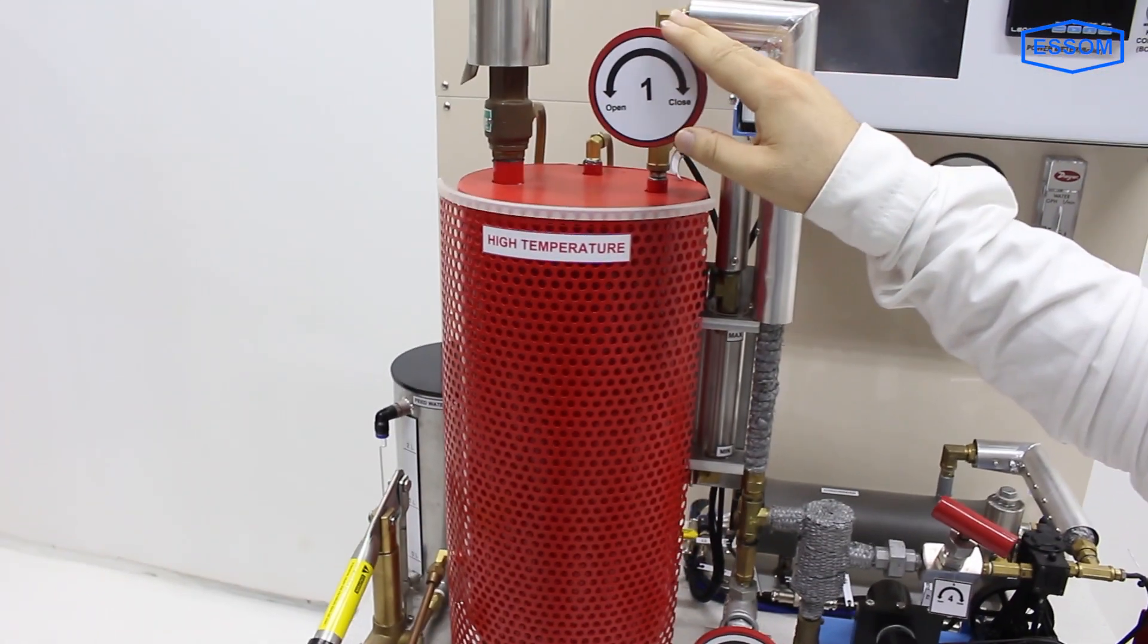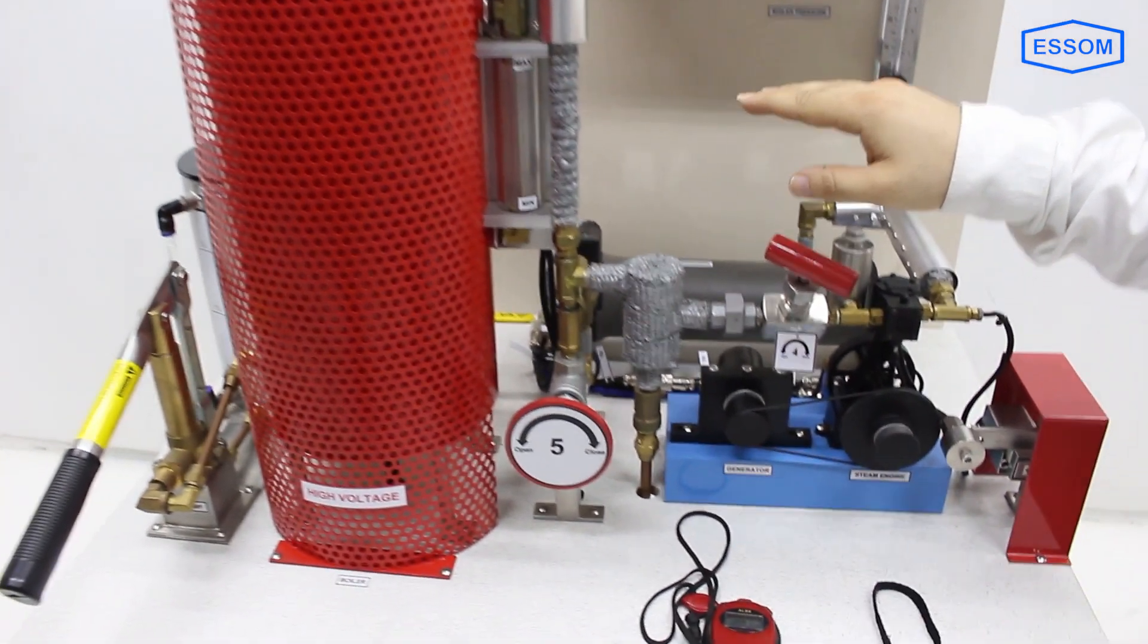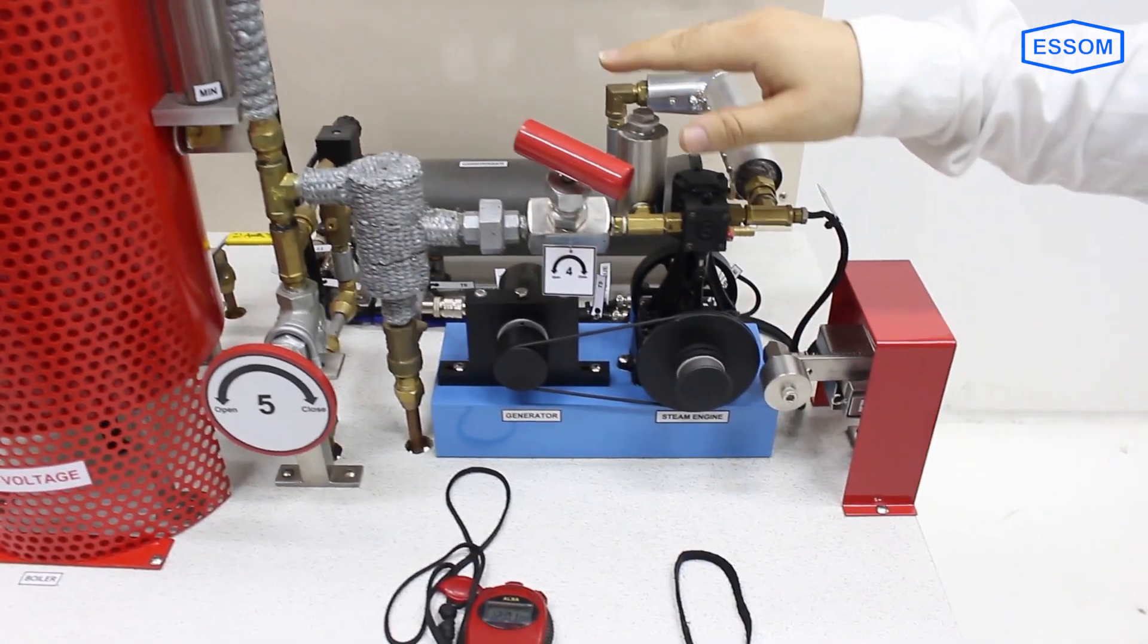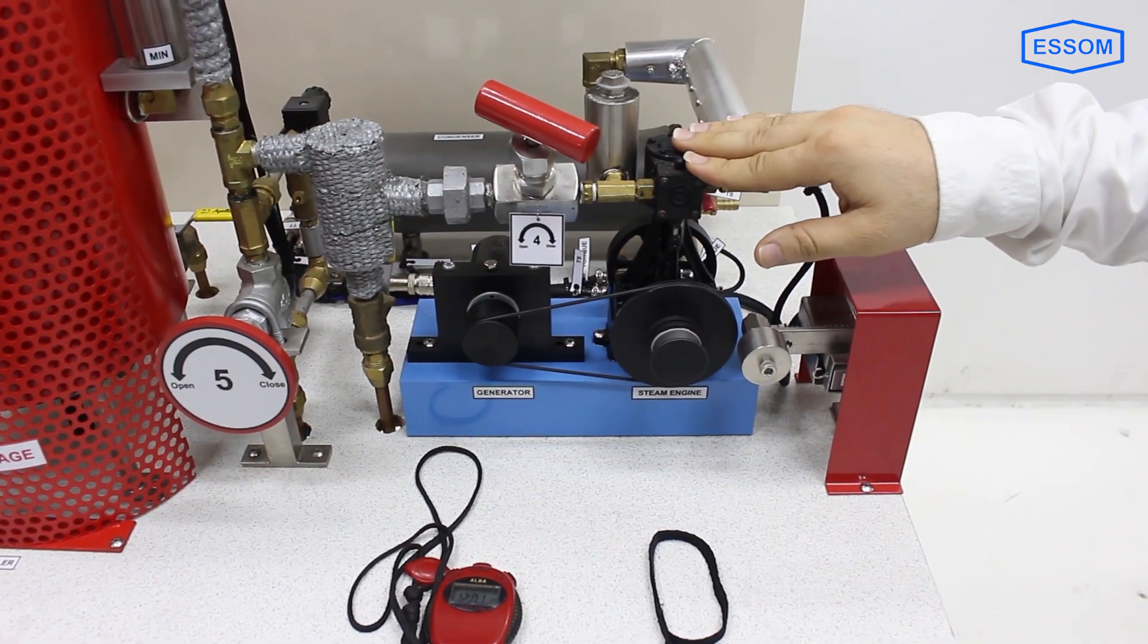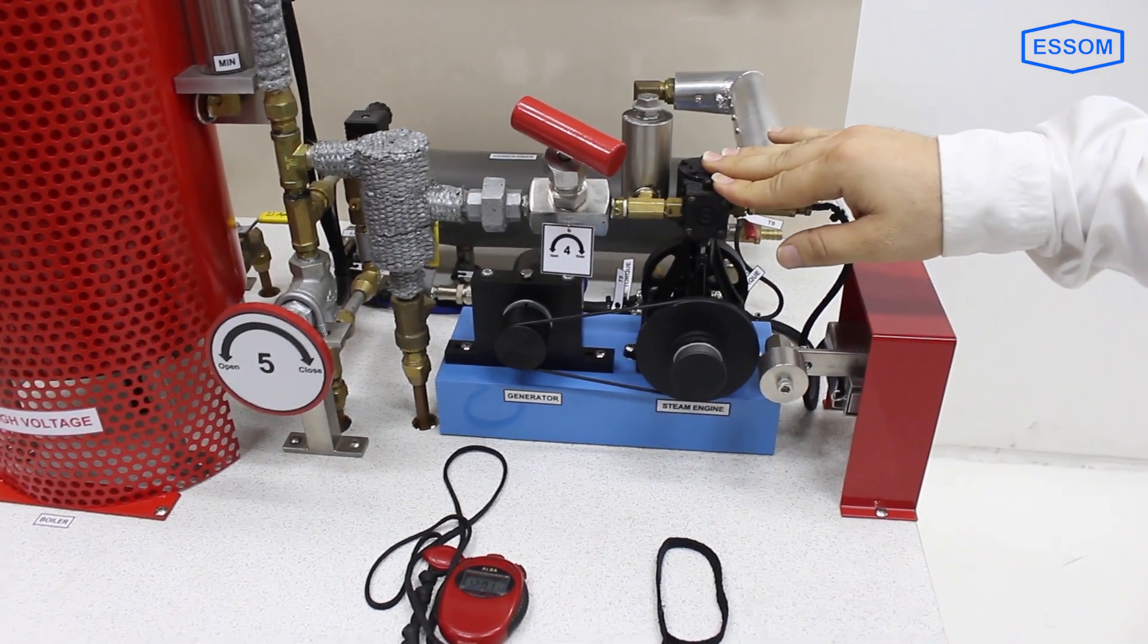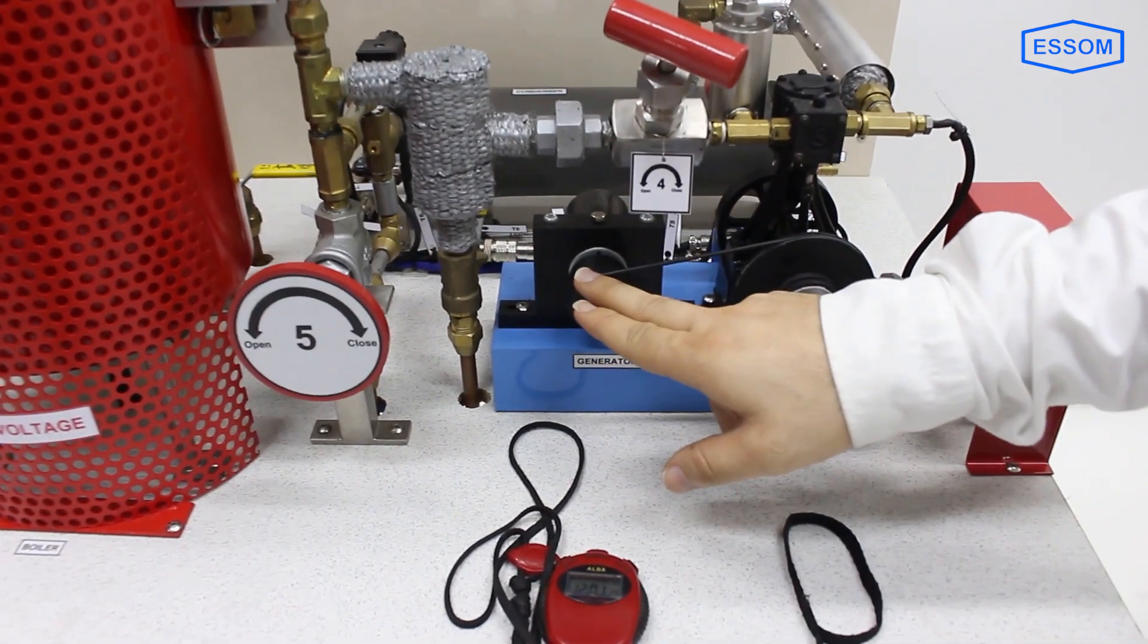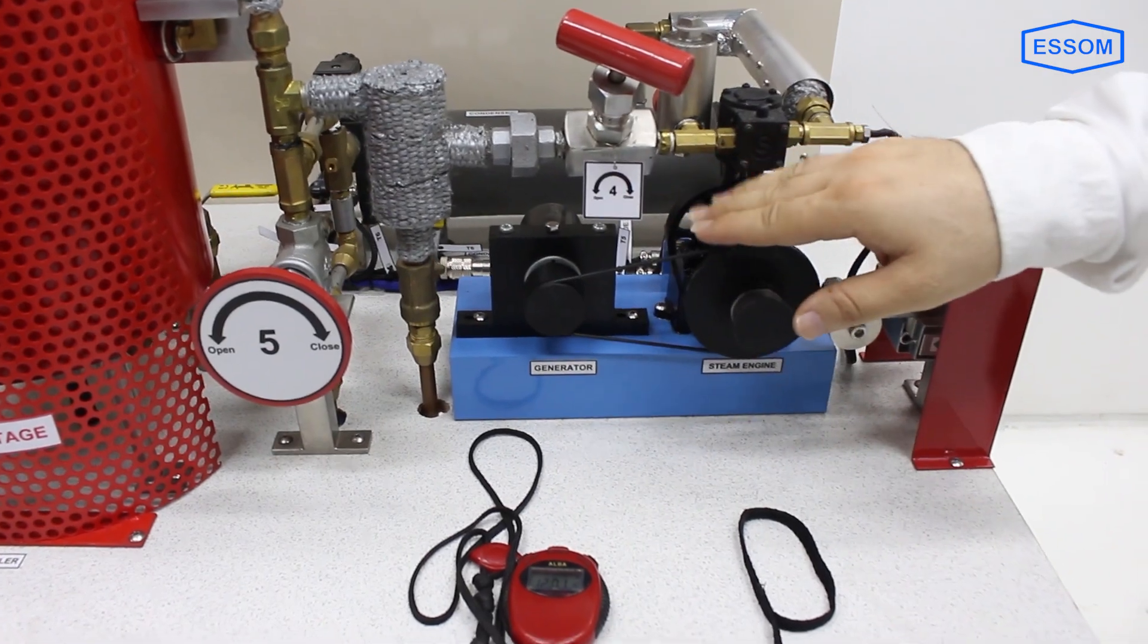Steam is routed to a single-cylinder, double-acting reciprocating engine. A small DC generator is connected to the engine by a belt and electrical load is applied.